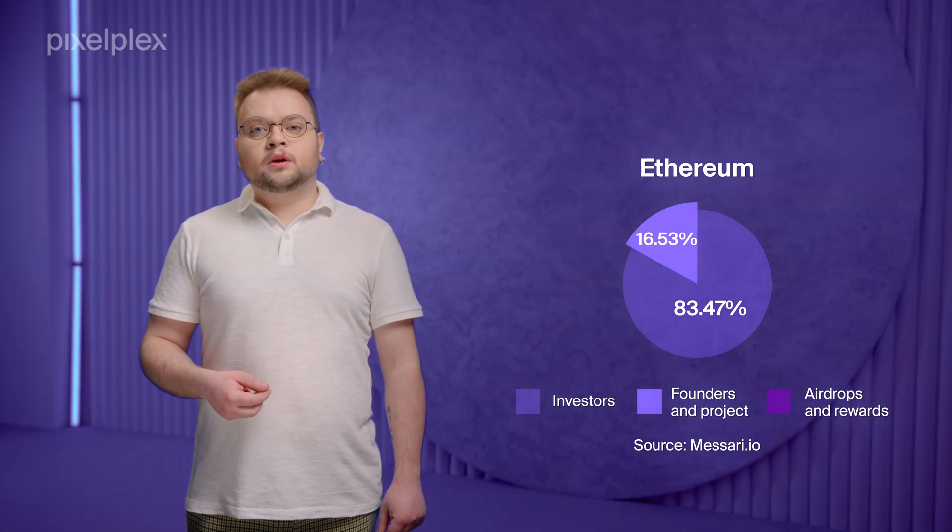Now let's take a look at real-life examples of token distribution. We will analyze how three successful blockchain platforms — Ethereum, Solana, and Polkadot — allocated their tokens during the initial token distribution. ETH's initial supply amounted to over 72 million tokens: 83.47% were purchased by investors, and 16.53% were distributed to the project founders and creators. The initial sale was held in 2014, helping the Ethereum Foundation raise over 31,000 Bitcoin, equivalent to 18.3 million dollars at the time.